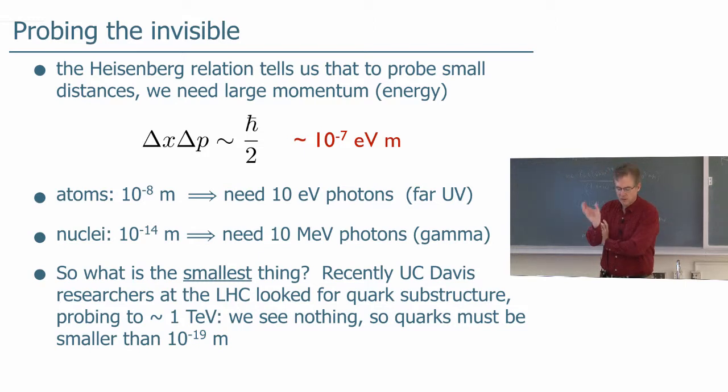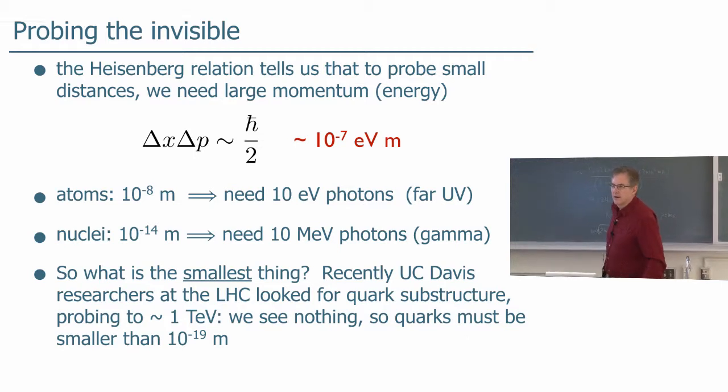If you're going to, what the Heisenberg Uncertainty Relationship tells us is that you're going to probe something on that distance scale, you need to have a probe that has momentum on that bigger scale. And if you work out this constant, you find this is about 10 to the minus 7th electron volt meters. So that's a fundamental energy distance scale of nature.